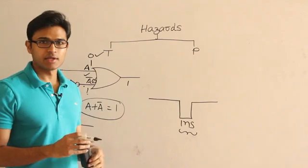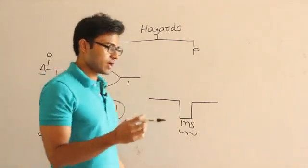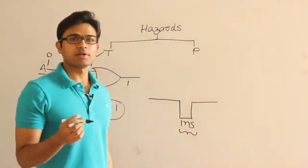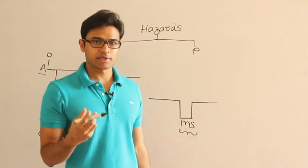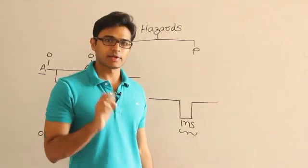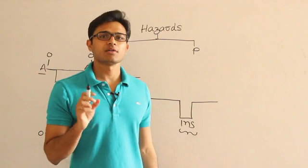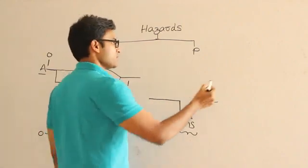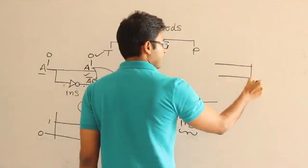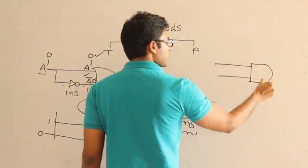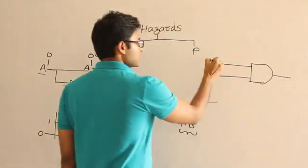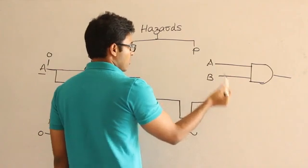The other one is permanent hazards. Permanent hazards will mainly occur because of either short circuiting or open circuiting. Open circuiting means a link will get broken and therefore it becomes always 0. For example, assume that is a circuit which is nothing but an AND gate with input A and input B. Output should be A AND B.